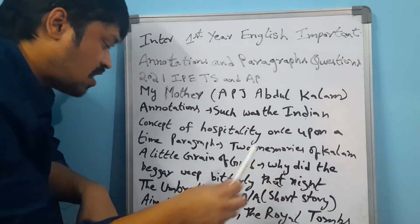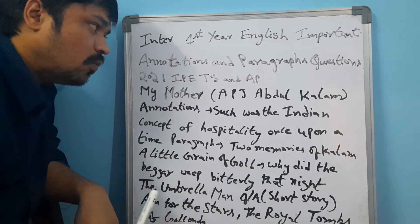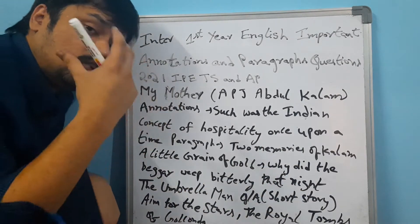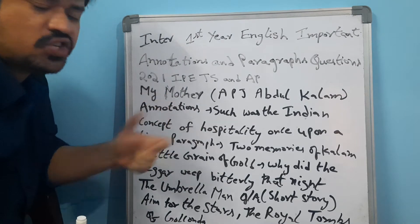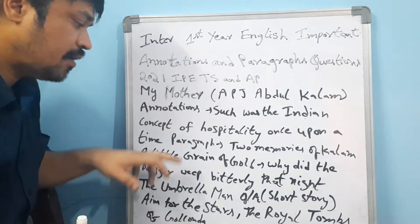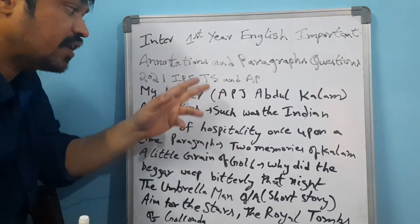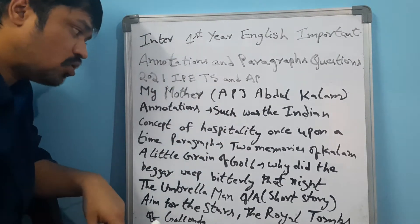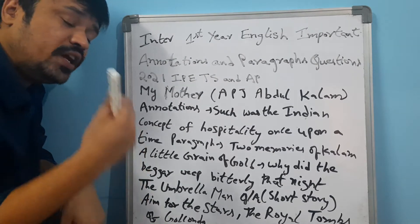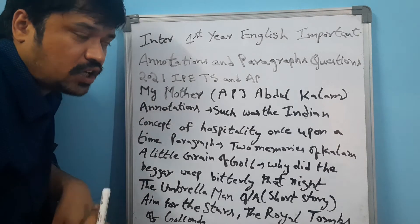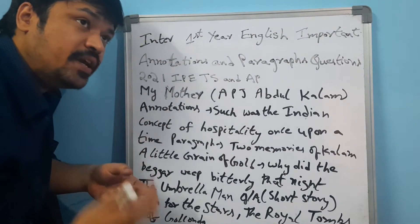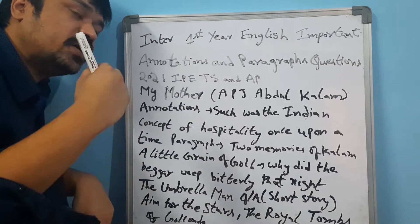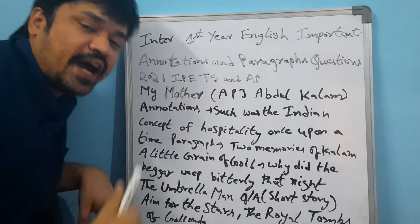The paragraph question regarding 'My Mother' by APJ Abdul Kalam is: narrate the two memories of Kalam. 'Two memories of Kalam' is one of the most important paragraph questions. You need to understand the concept and the meaning of that paragraph and the annotations.